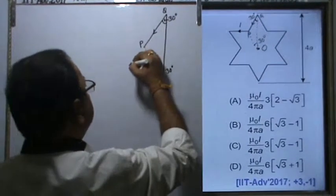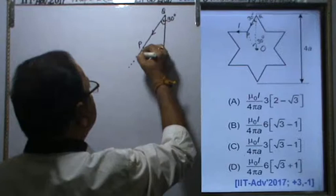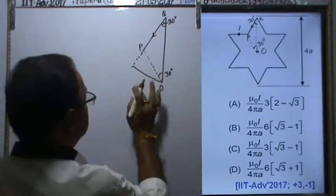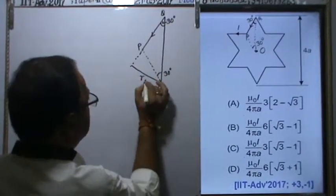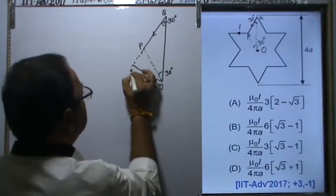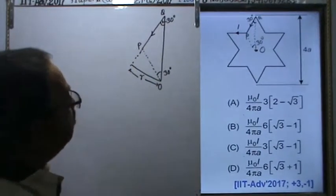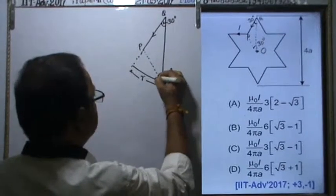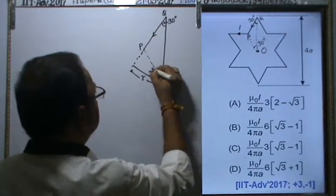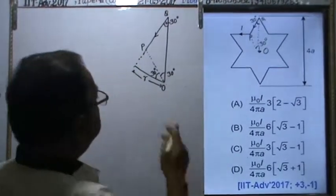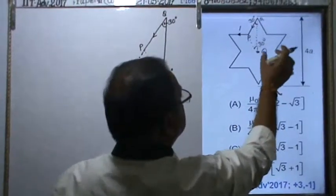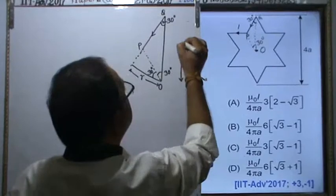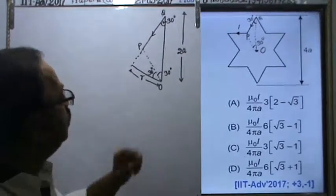Now we join this point to O and draw a perpendicular. This perpendicular length, we denote as r. By symmetry, this angle will also be 30 degrees. The total length is 4a, so from center O, this length will be equal to 2a.